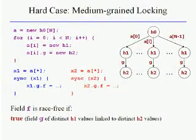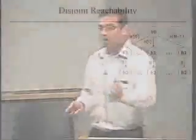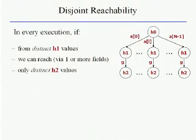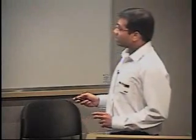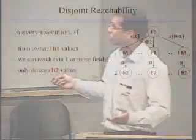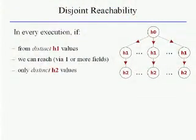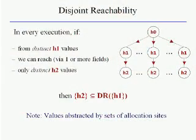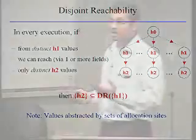The reason this predicate holds is subtle. If x1 and x2 are distinct array elements, following their g fields in this data structure always leads to distinct h2 values — there's no way to reach the same h2 value from distinct h1 values. This motivates what we call disjoint reachability analysis: inferring when the g field of distinct h1 values leads to distinct h2 values. The disjoint reachability property DR states that in every execution, from distinct h1 values, following one or more fields reaches only distinct h2 values.